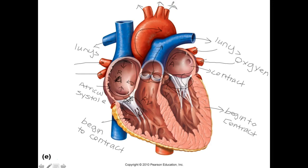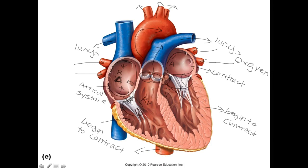From the aorta, oxygenated blood travels throughout the body to provide oxygen to different tissues. This is the bottom portion of the aorta — it continues into the abdominal and pelvic area, where it becomes the thoracic and then abdominal aorta. If you pay attention to which side of the heart is thicker or thinner and what it connects to, it will all begin to make sense.